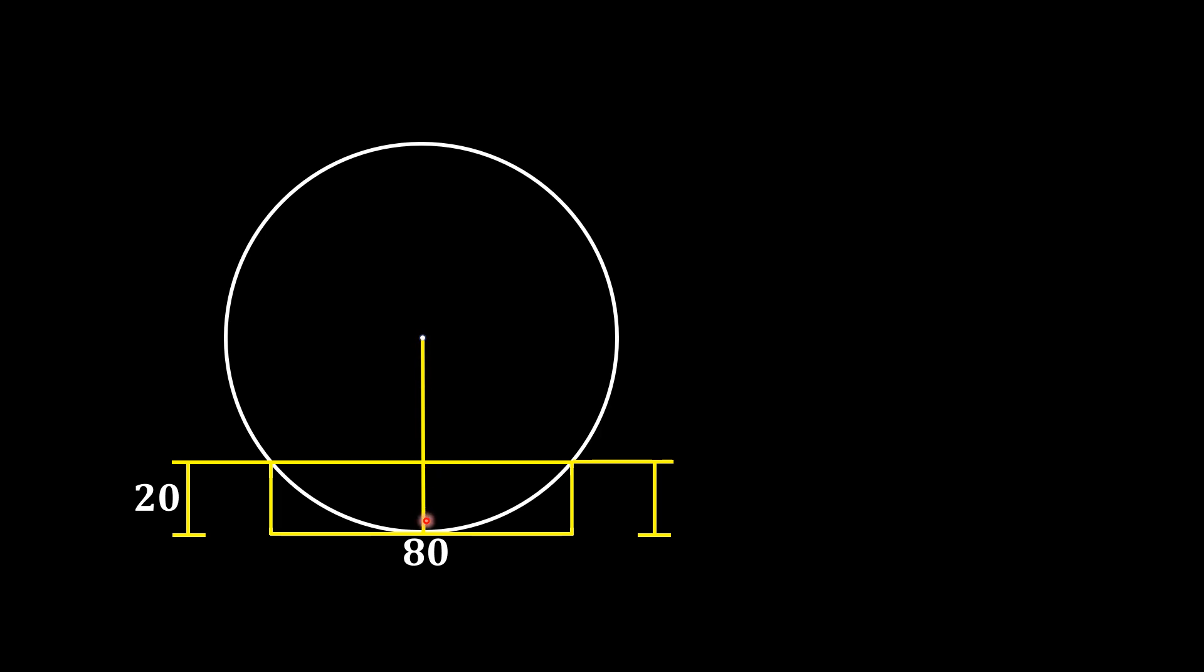Now, since this length is 20 units, this length is equal to r minus 20. If r is the radius, then this is r minus 20.